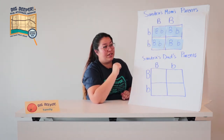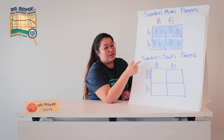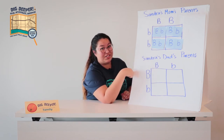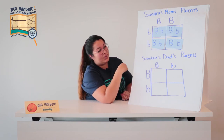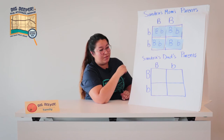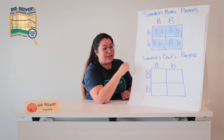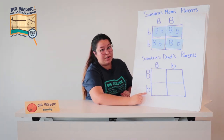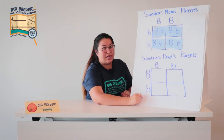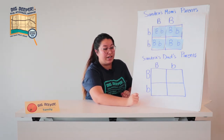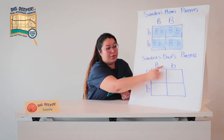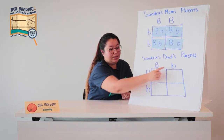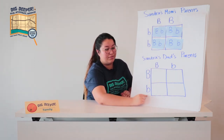Now, this heterozygous pairing is going to follow through to Sandra's example. But let's look at Sandra's dad's parents — her grandfather on top, her grandmother on the side. Both of Sandra's dad's parents have a heterozygous pairing for the brown-eyed allele, so big B, little b for each of them.